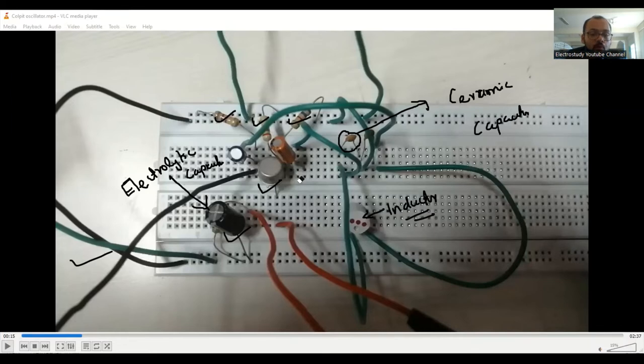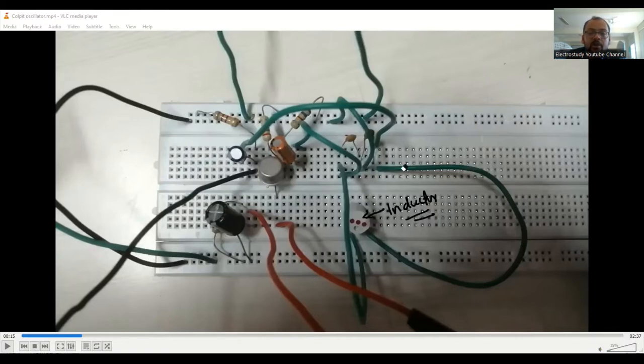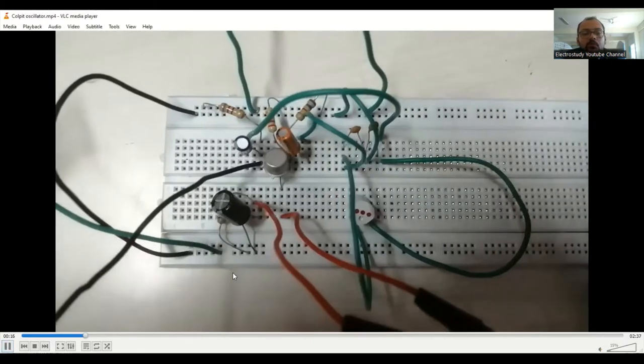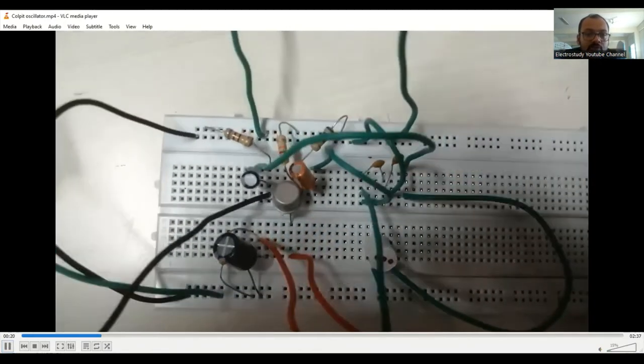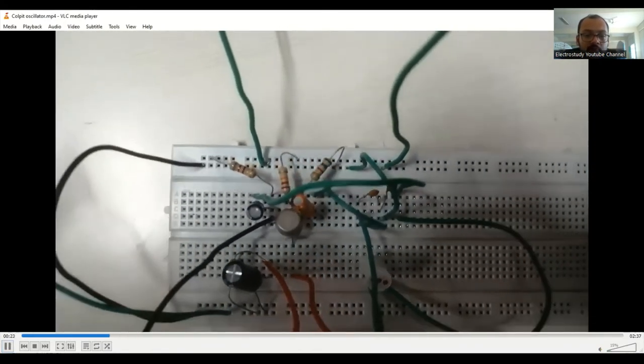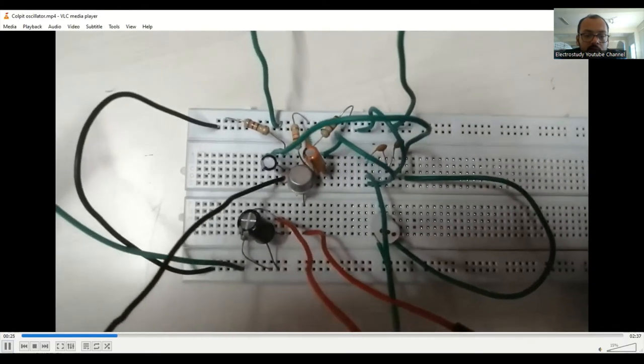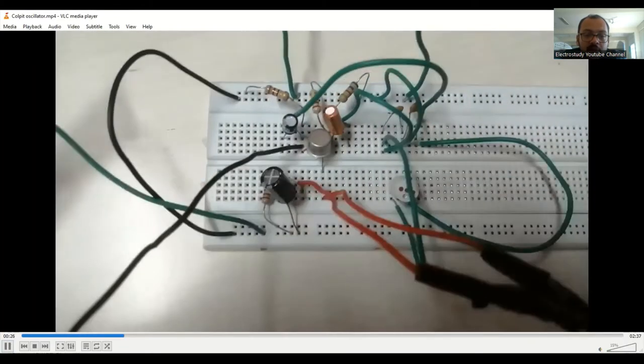Then, you have to connect the output to the CRO. Then, you need to provide the biasing voltage from the regulated DC power supply. Biasing voltage will be given as 10V that you have to set. It will be DC only. This is your entire circuit.